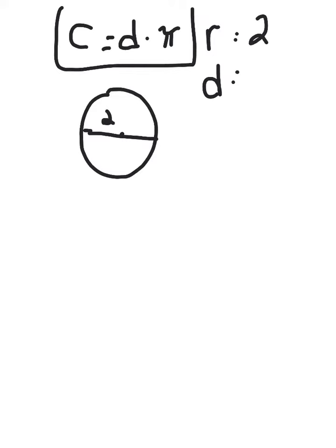So in this case, the radius is 2 and the diameter is 4. To find the circumference of this one, I would just take the diameter times pi. So I take 4 times 3.14. That equals 12.56.